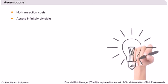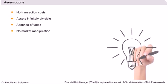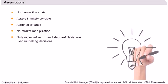The second assumption means that you can buy or sell any asset in fractions also. The third assumption means that there are no income taxes and hence there is no difference in income from dividends or capital gains or profit from an increase in the price of a security. The fourth assumption means that single investors cannot manipulate or affect the market by buying or selling in huge amounts.